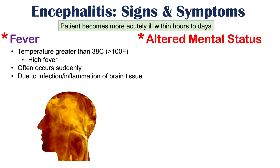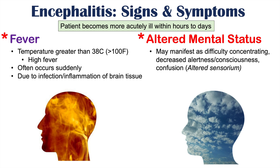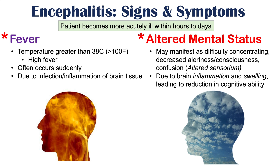Another very important symptom of encephalitis is altered mental status — a key symptom. It may manifest as difficulty concentrating, decreased alertness, decreased consciousness, confusion, or altered sensorium where the patient feels not quite aware of their surroundings. Fever, altered mental status, and headache are classic symptoms of encephalitis. Brain inflammation and swelling cause a reduction in cognitive ability, which is why we see altered mental status.